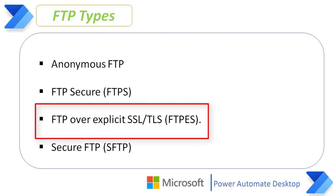The third type is FTP over explicit SSL or TLS, also called FTPS in short form. This approach enables explicit TLS support by upgrading an FTP connection over port 21. Note that FTPS (implicit) works on port 990, whereas FTP over explicit SSL/TLS works on port 21 by encrypting the connection.